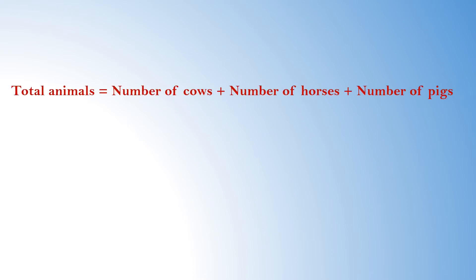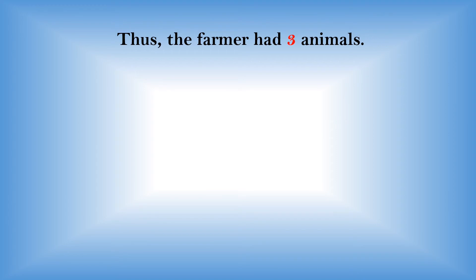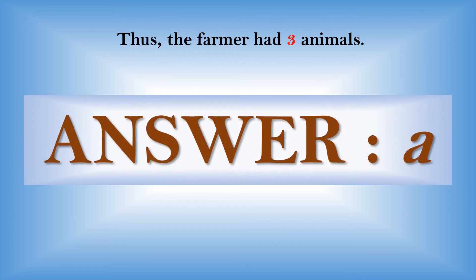Total number of animals equals number of cows plus number of horses plus number of pigs. This implies that X equals (X minus 2) plus (X minus 2) plus (X minus 2), which gives X equals 3. Thus the farmer had three animals. The right answer to the question is option A.